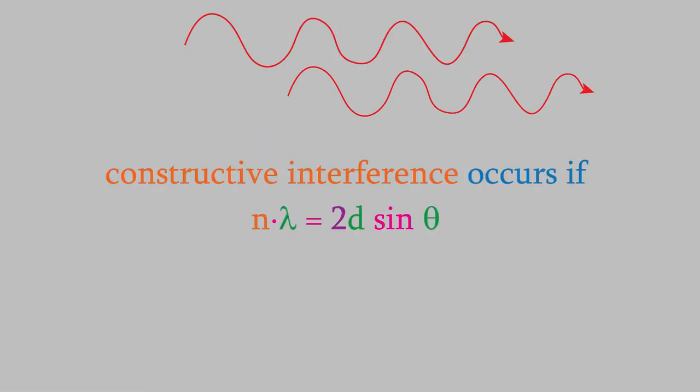That gives us this equation, where n is equal to some positive integer, and theta is in radians. If we rearrange slightly, we get this.